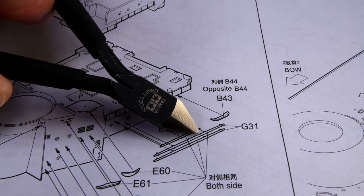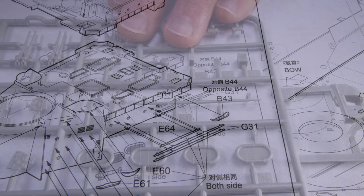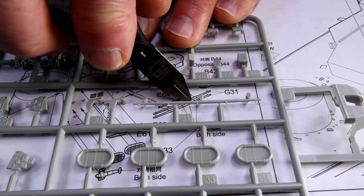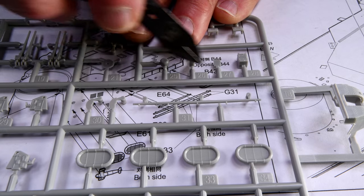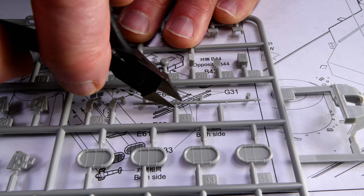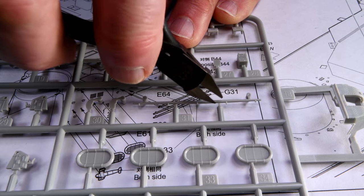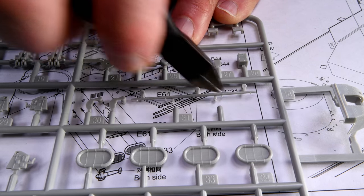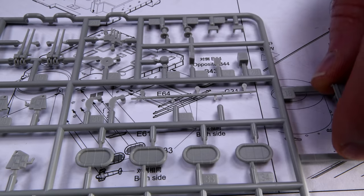We need G31. Now we need a total of four of these G31s. And once again, there's only one on each sprue, but there are four sprues.